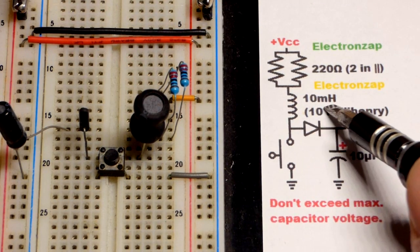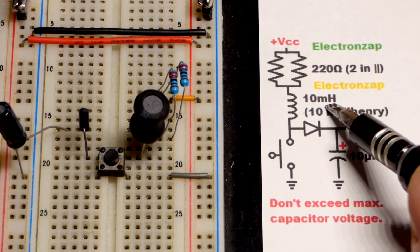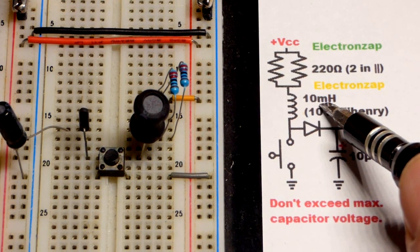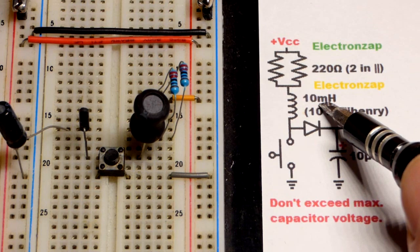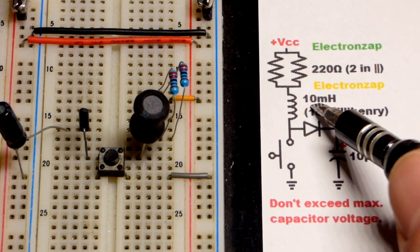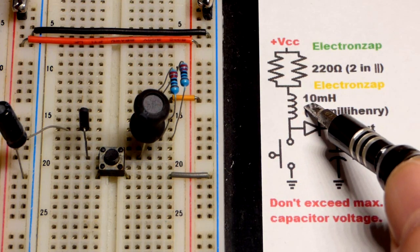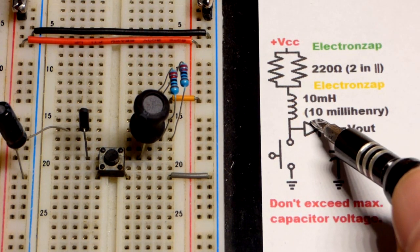Now the reason why I used a 10 millihenry inductor is because that's what I was able to buy. It's a somewhat high value inductor and I didn't pay a ton of money for it. You gotta just look for that. Generally you don't buy inductors in a wide range because they're kind of expensive.